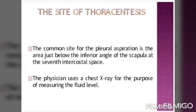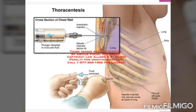The site for Thoracocentesis: the common site for pleural aspiration is the area just below the inferior angle of the scapula at the seventh intercostal space. The site should be in the mid-scapular or posterior axillary line, 6 to 10 cm lateral to the spine, between the seventh and eighth intercostal space. The physician uses chest X-ray to confirm which lung is filled with fluid and to measure the fluid level. The lower level of the scapula is used as a landmark, and the physician may use the percussion method — the site of puncture being the region dullest to percussion.